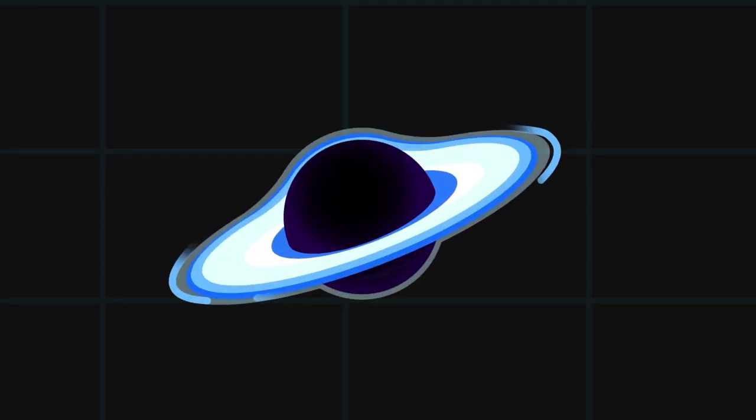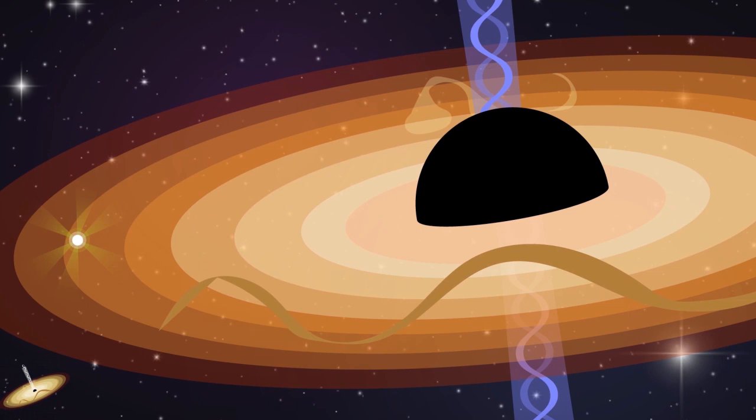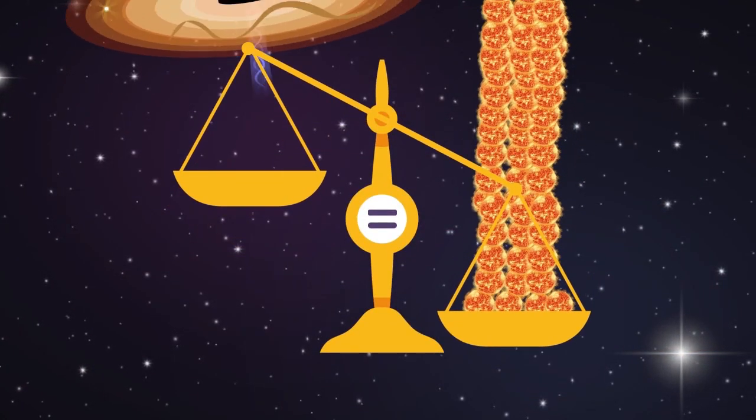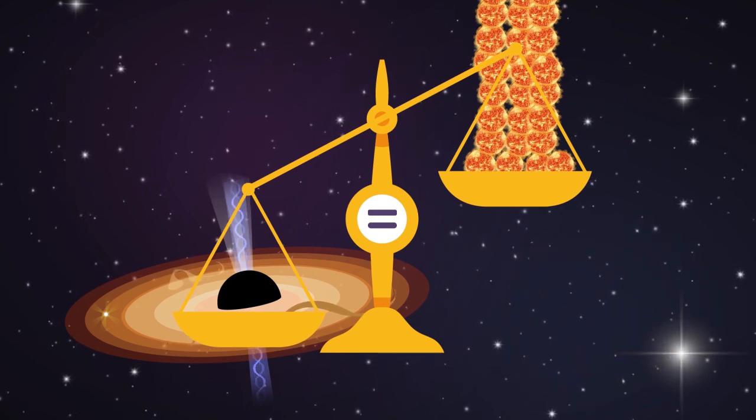At the center of the galaxy is what scientists believe is the largest black hole to date, Black Hole Phoenix A. This black hole has a mass 100 billion times that of our sun, even heavier than some existing galaxies, numbers so big that even our brains find it difficult to imagine.